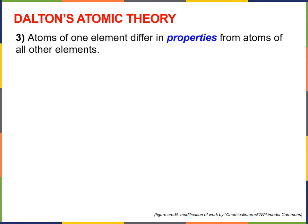The third postulate of Dalton's atomic theory is that atoms of one element differ in properties from atoms of all other elements. Postulate two said all atoms of copper are the same — it doesn't matter where the copper comes from, whether it's from a pipe or a penny, the atoms of copper are identical to one another. Postulate three says that the atoms making up copper are different from the atoms making up iron or oxygen.